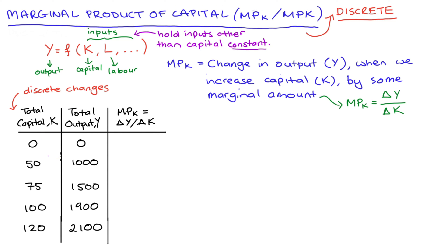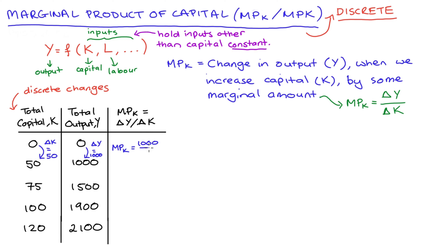Going through an example with a table: the first column tells us the total level of capital K, and the second column is total output Y. To find the marginal product of capital, as we go from 0 to 50 units of capital, our change in K is 50. Our change in total output is 1000 (Y increases from 0 to 1000), so the marginal product of capital is 1000 divided by 50, which equals 20.